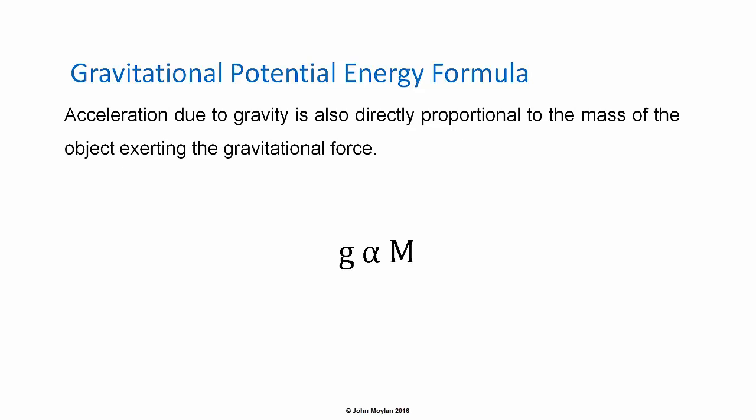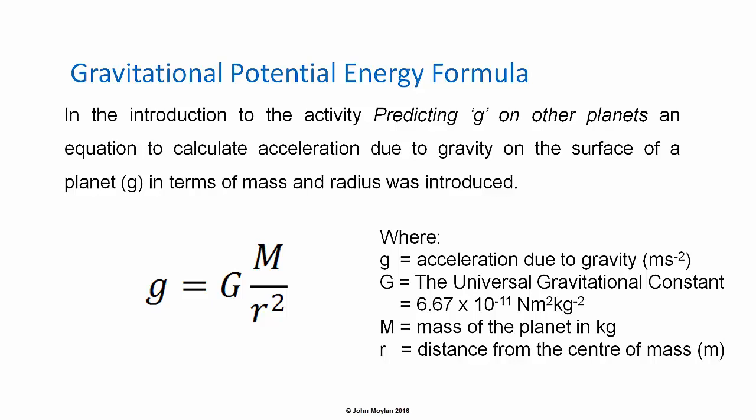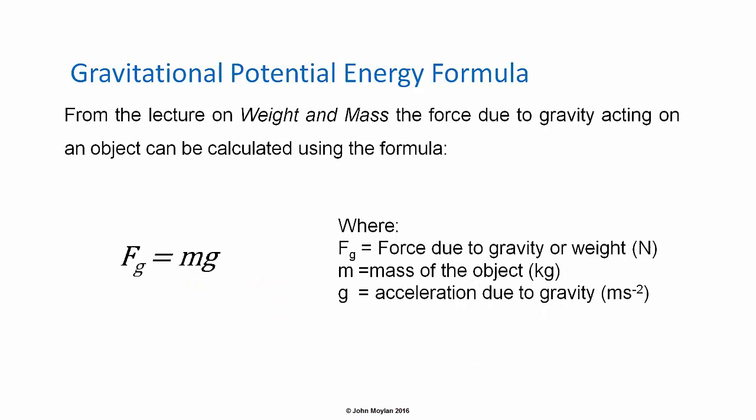When thinking in terms of space, the value of acceleration due to gravity is not constant, but decreases with the square of the distance from the center of mass of an object. Acceleration due to gravity is also directly proportional to the mass of the object exerting the gravitational force. Combining these and introducing a constant of proportionality capital G, we get the equation g equals capital G, the universal gravitational constant, multiplied by capital M, the mass of the object exerting the gravitational force in kilograms, over r squared, where r is the distance from the center of mass in meters. The force due to gravity or weight of an object can be calculated using F subscript g equals mg, where m is the mass in kilograms and g is the value of acceleration due to gravity in meters per second squared.